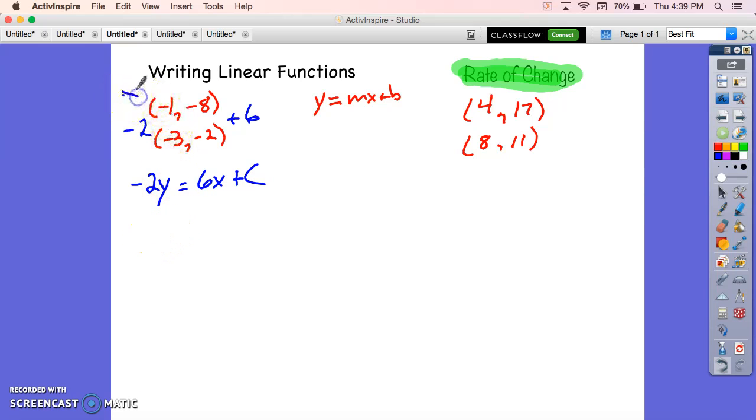I'm going to choose the top one for my checkpoint. So, negative 2 times negative 8, 6 times negative 1 plus c, I get positive 16, negative 6 plus c, add the 6 to both sides, 22 equals c.